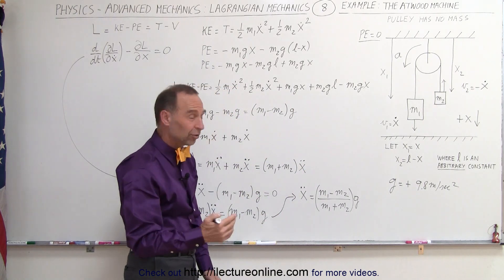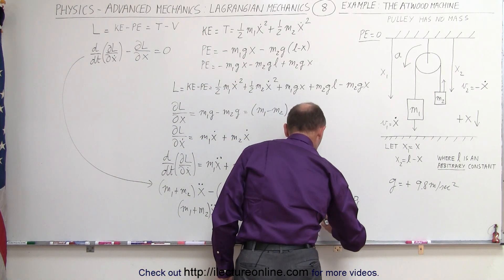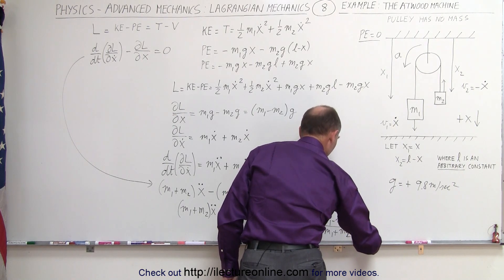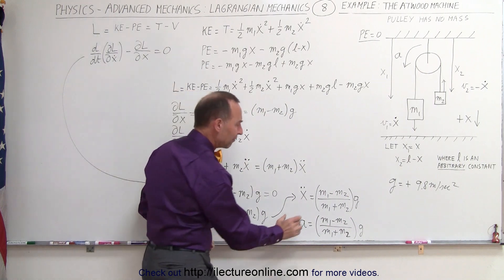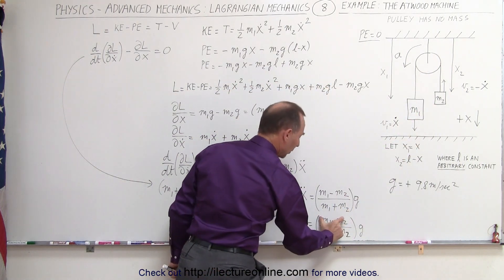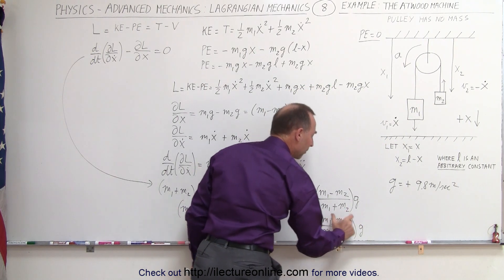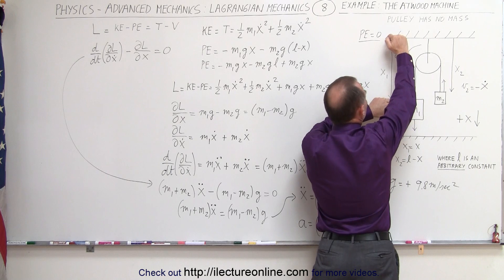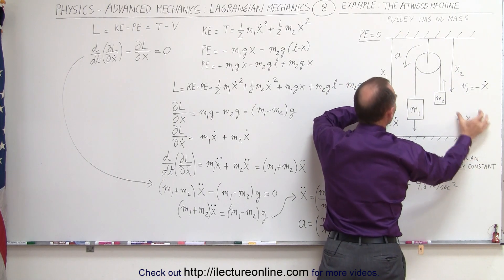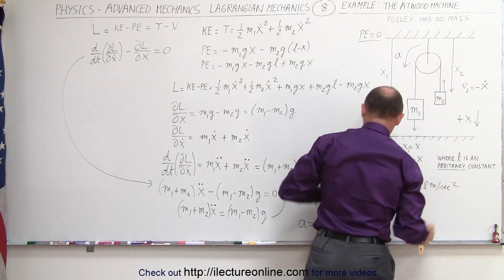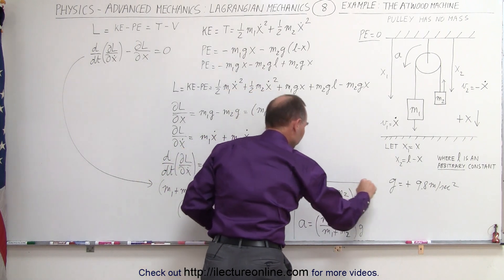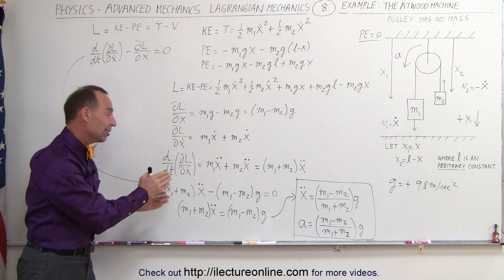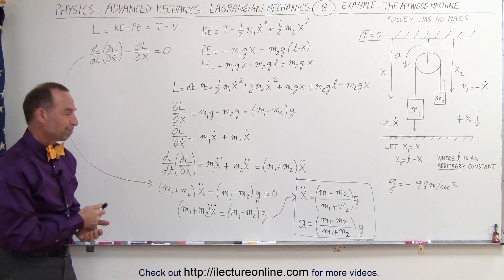This is equal to the acceleration of the system: a equals (m1 minus m2) divided by (m1 plus m2) times g. Notice that with m1 larger than m2, the numerator is positive, divided by a positive quantity times a positive number, so a is a positive quantity. That means we expect the acceleration to be in the positive x direction, which matches the expected direction. And that's how we use the Lagrangian to achieve the same result as simple algebraic techniques for the Atwood machine.